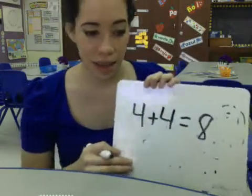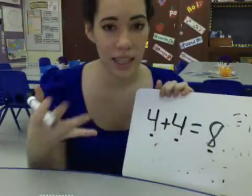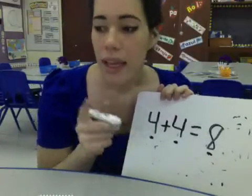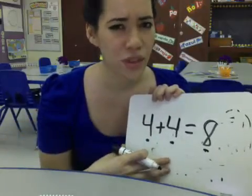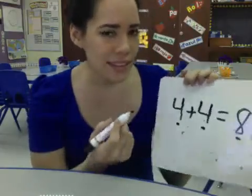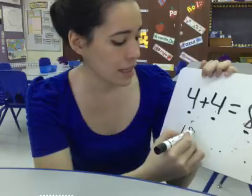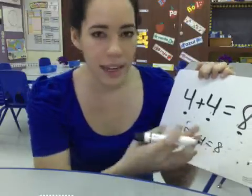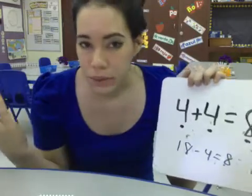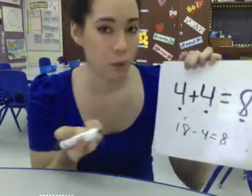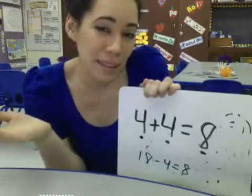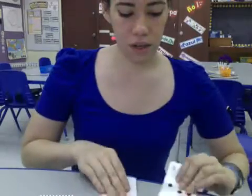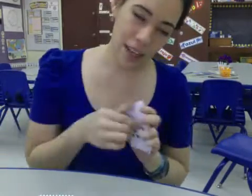So I can take the cards 4 and 4 and 8, and I get to keep them. Remember, you need to watch your partners and make sure their math is correct. Because if I said 18 minus 4 equals 8 and took those cards, I would be wrong — 18 minus 4 is 14. So make sure the people you're playing with are not making mistakes. So I'm going to take those cards: 4, 4, and the target 8, and I get to keep those cards.